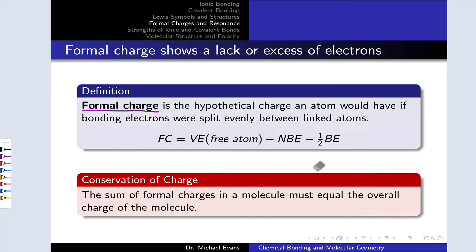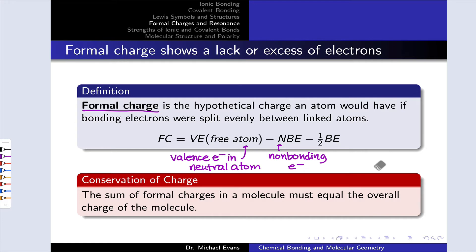There's also a formula that encapsulates this mental process of splitting the electrons. To calculate the formal charge, we first determine the number of valence electrons in the free atom when neutral — this comes from the position on the periodic table. Group one has one, group two has two, group 13 has three, et cetera. We subtract the number of non-bonding electrons next, because for each non-bonding electron sitting on that atom we get a negative one charge. Then we take only half of the bonding electrons, because we're splitting that bond down the middle. So: valence electrons minus non-bonding electrons minus half the bonding electrons gives us the formal charge.